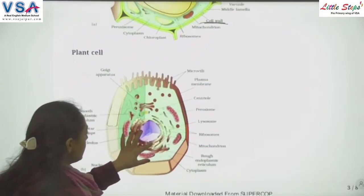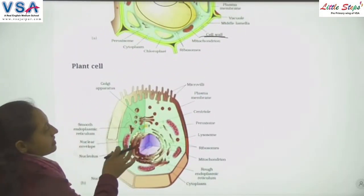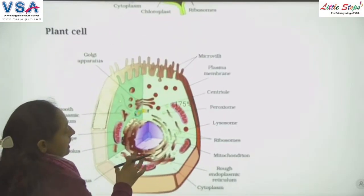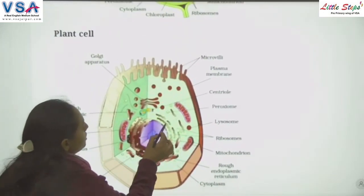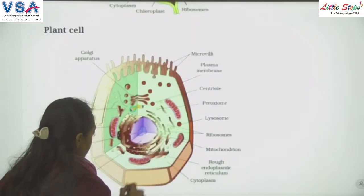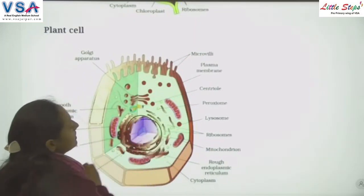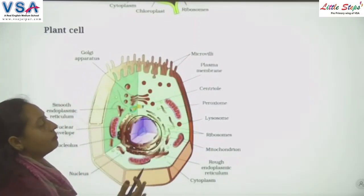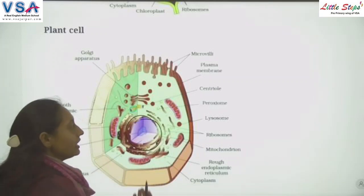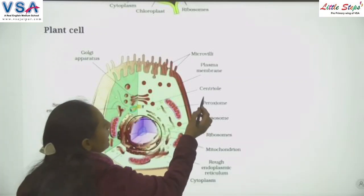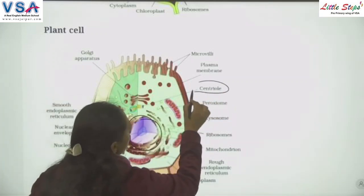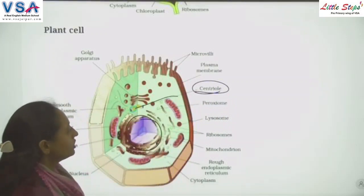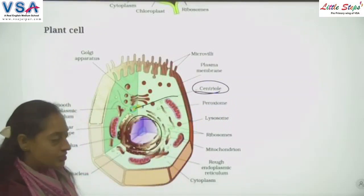In the animal cell, the nucleus is present at the center because there is no large vacuole. Centrioles are present in the animal cell.